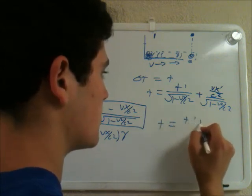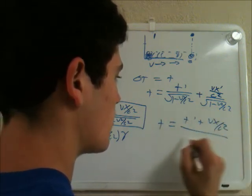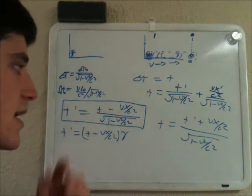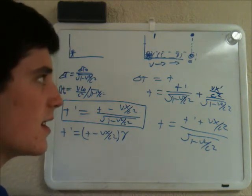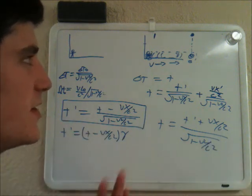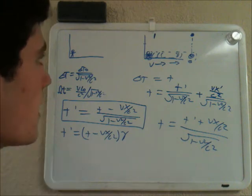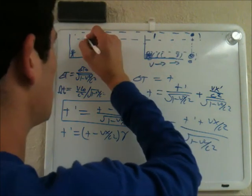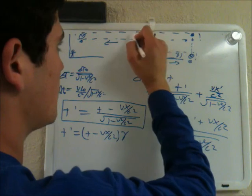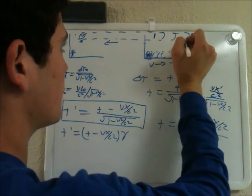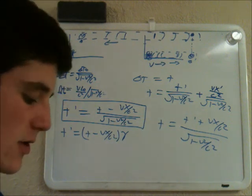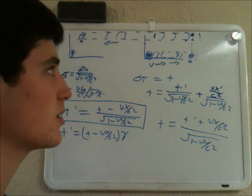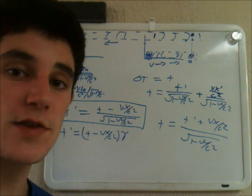So T = (T' + Vx'/c²) / √(1 - v²/c²). This is the Lorentz transformation for time when converting from prime measurements to not-prime measurements. It's kind of difficult to visualize, but you have your clock moving in this direction, and these waves hit this one first and this one later. I'll do a more mathematical derivation in another video. This is the Lorentz transformation for time. Thank you.